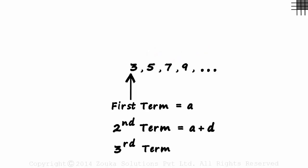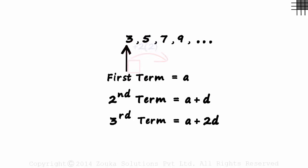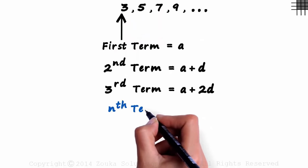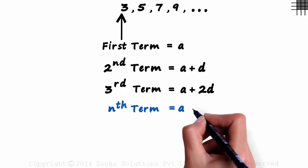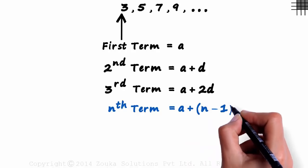What can the third term be written as? That's easy! We write it as A plus 2D, first term plus twice the common difference. So based on this logic, how can we write the nth term? We can write it as A plus N minus 1 times D.